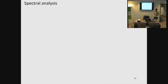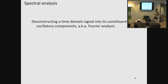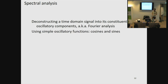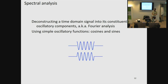Moving on to spectral analysis. What we do in spectral analysis is we deconstruct a time domain signal into its oscillatory components. This is also called Fourier analysis. In Fourier analysis we use simple oscillatory basis functions, namely cosines and sines. The cosine is on top and the sine is on the bottom — these are the same signal but just 90 degrees shifted relative to each other.